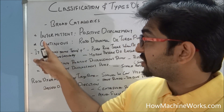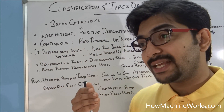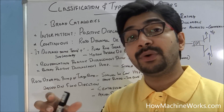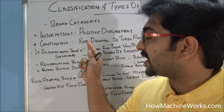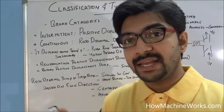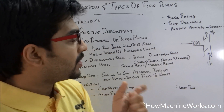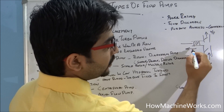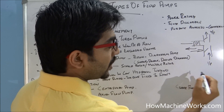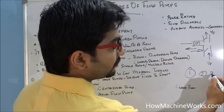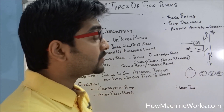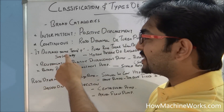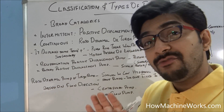The intermittent or positive displacement pump creates a positive flow — meaning when the pump functions, there will always be a flow. For example, in a piston-type positive displacement pump, when the piston moves backwards there is suction, and when it moves forward there is discharge. So the flow alternates: no flow, flow, no flow, flow — that's why it's called an intermittent positive displacement pump.